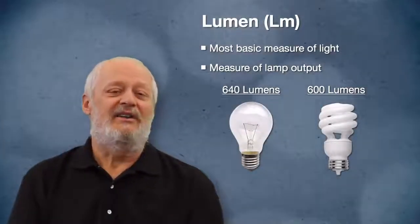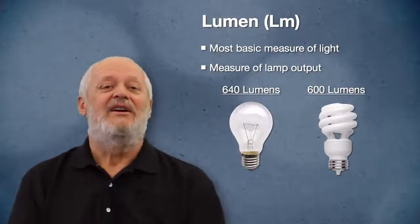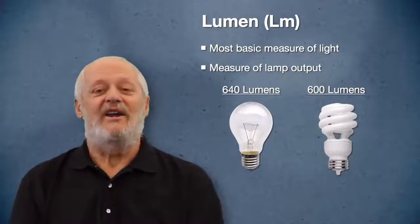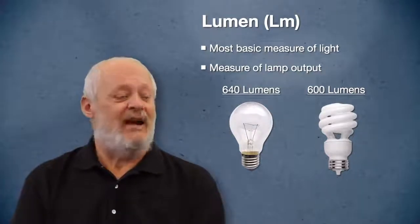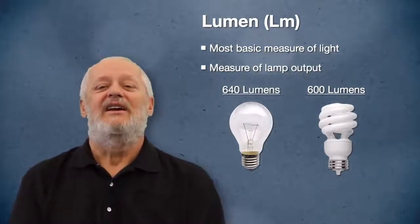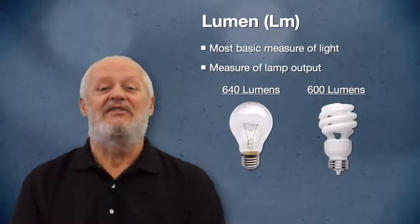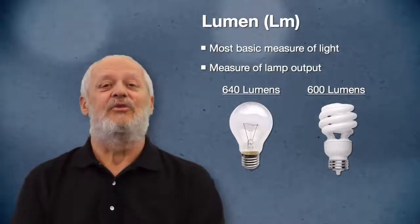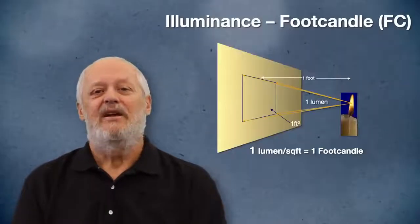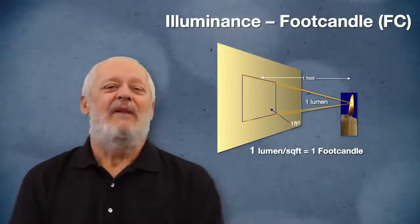Here we have a couple of examples. On the left is a typical incandescent lamp that puts out 640 lumens. On the right, we have a compact fluorescent spiral lamp you probably recognize, and that puts out 600 lumens, which is obviously designed to replace that 640-lumen incandescent lamp.